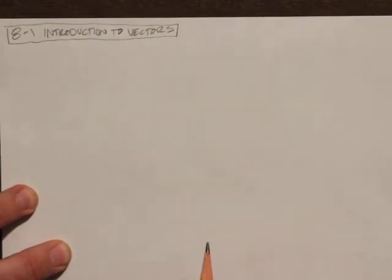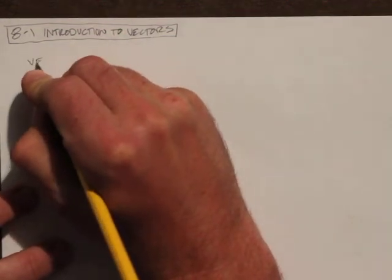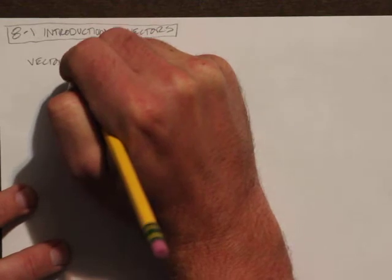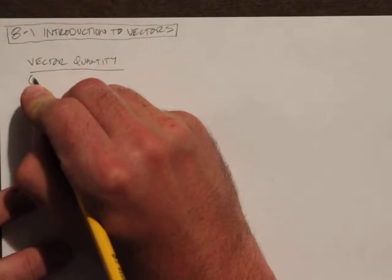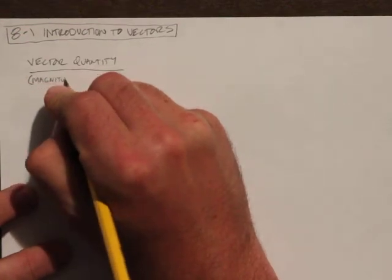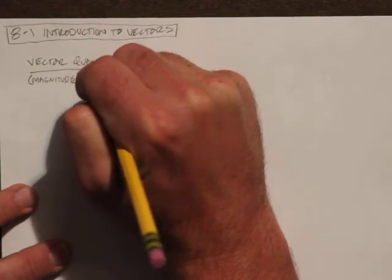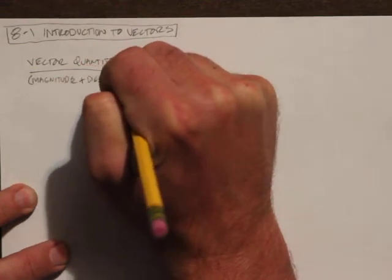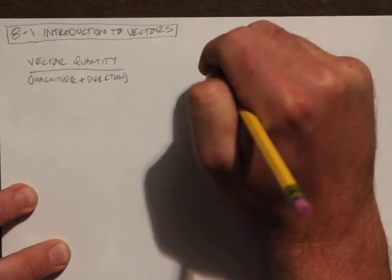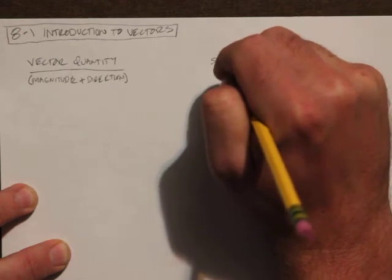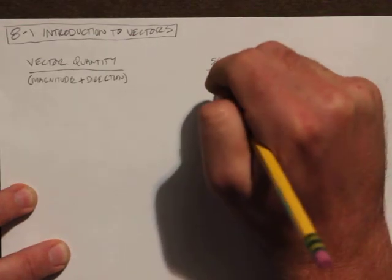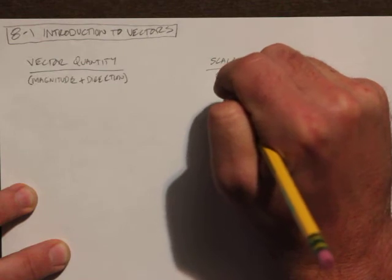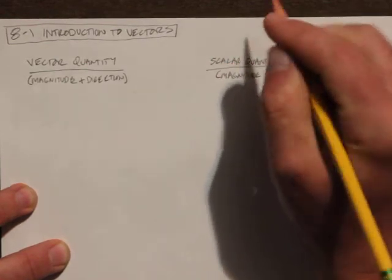On the left side we're going to have vector quantity. A vector has magnitude and direction. On the right side we have a scalar quantity, and this has magnitude or size.